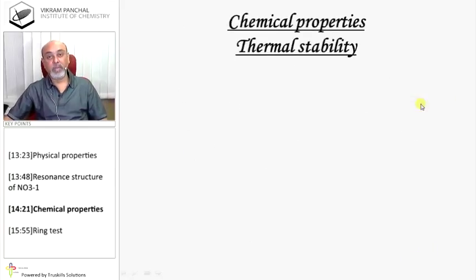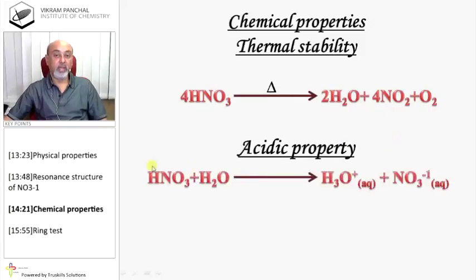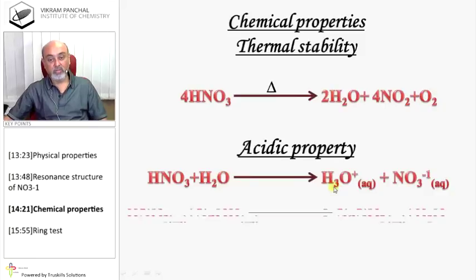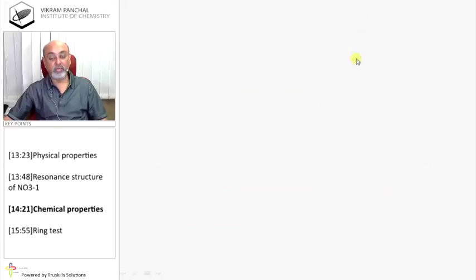Chemical properties - Thermal stability: HNO3 is stable but on heating gives NO2 and oxygen. Acidic property: HNO3 dissolves in water and releases 1 H+ ion, so it is monobasic acid. HNO3 reacts with NaOH and gives sodium nitrate and H2O.